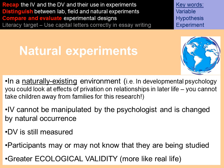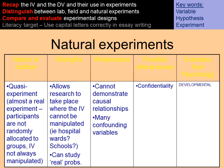The last type is a natural experiment. A natural experiment is what it says — it is a naturally existing environment and the IV cannot be manipulated by the psychologist. It's changed by a natural occurrence, and we are still measuring the DV. Participants may or may not know that they're being studied, and it gives greater ecological validity because it's much more like real life. It allows research to take place where the IV can't be manipulated — for example in hospitals or schools — and allows us to study real life problems.